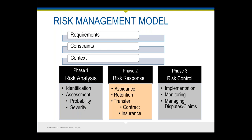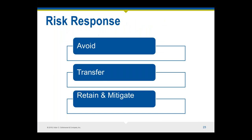This brings us to phase two. You've analyzed all the risk, done your scale of one to ten, and figured out what the risks are on this particular project. How are you going to respond? Basically, there are three risk responses: avoidance, transfer, and retain and mitigate.